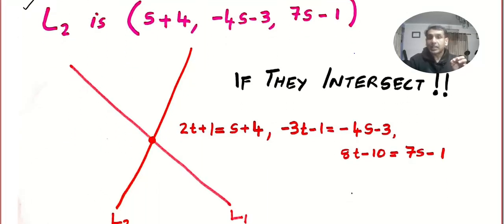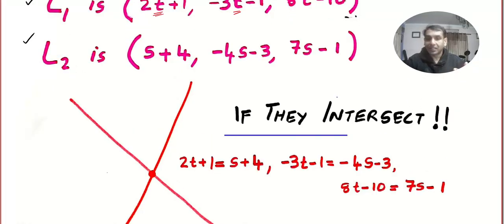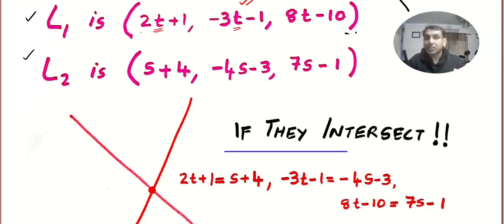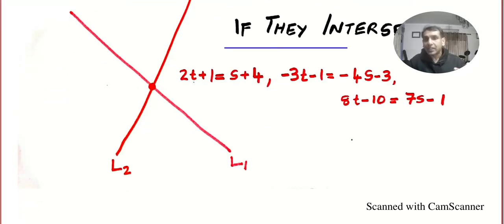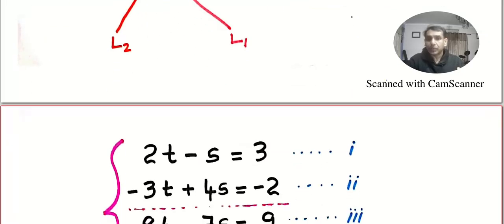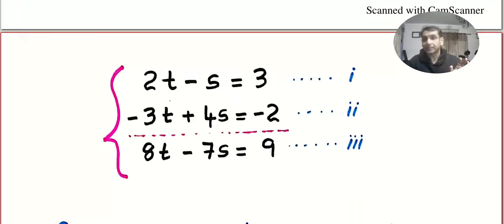But can you see the common point? So I am going to write, if they intersect - I am not guaranteeing they are intersecting - in case they intersect, at the intersection, this will be equal to this, this will be equal to this, and this will be equal to this. And we get three equations. We get three equations which I am going to write like this. Take everything to one side and keep the constants on the other side.